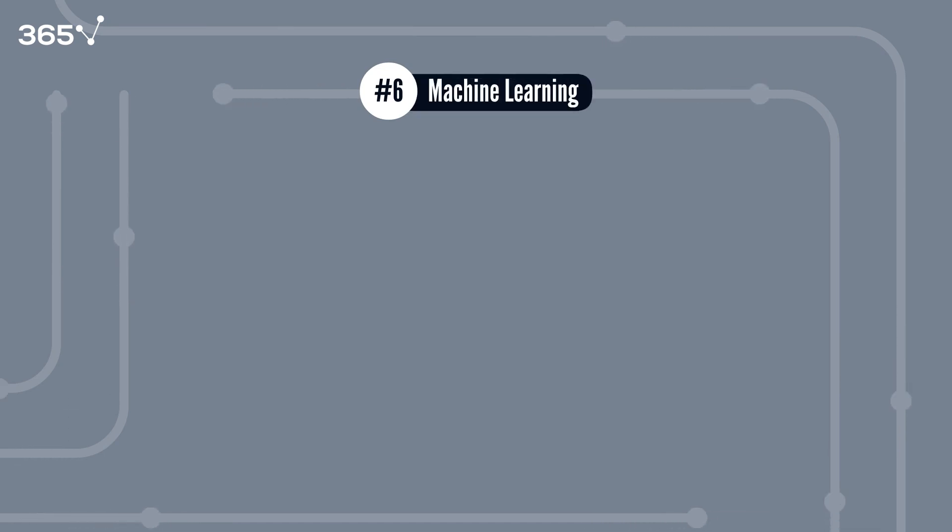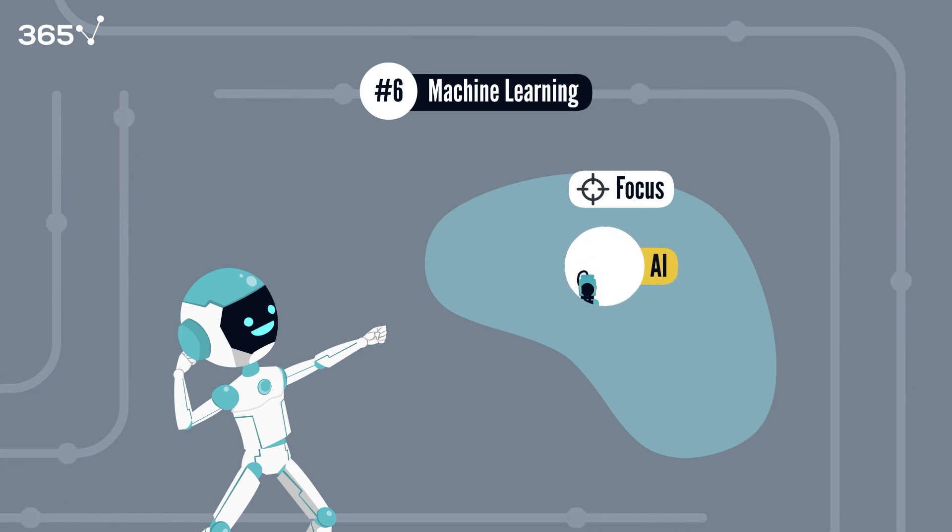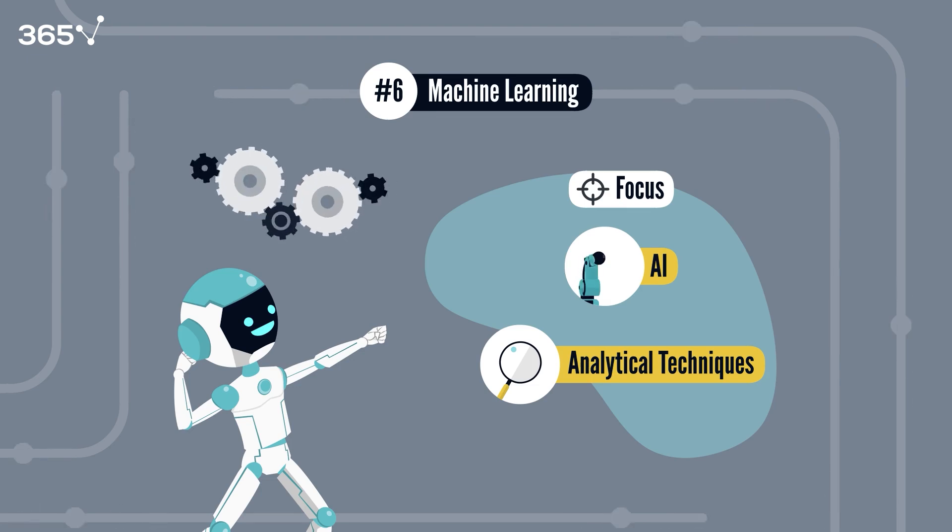Number six, machine learning. Machine learning degrees are the cutting edge of data science education, focusing specifically on AI and advanced analytical techniques. These specialized programs prepare you for the most technical aspects of modern data science.